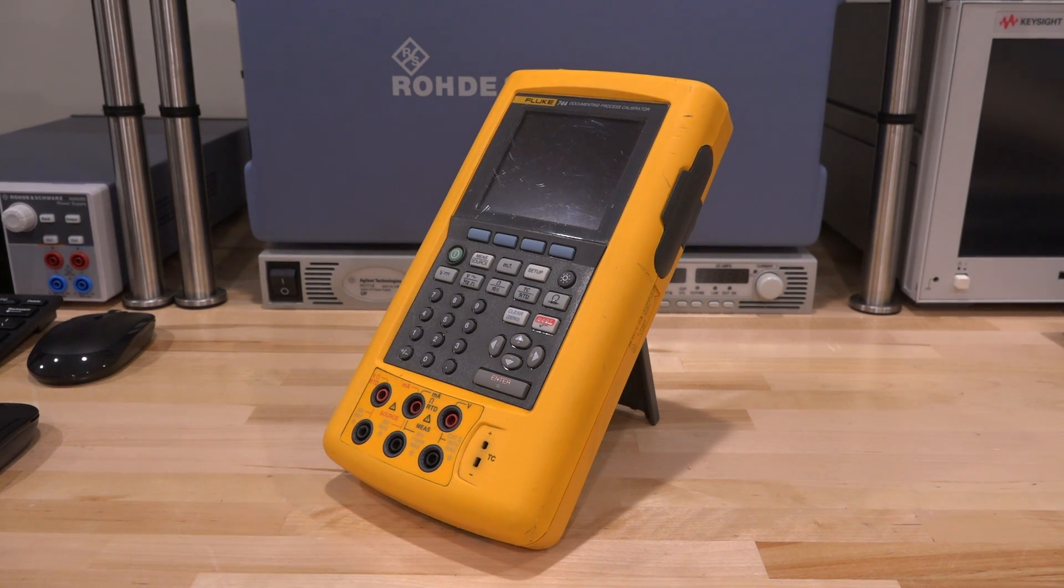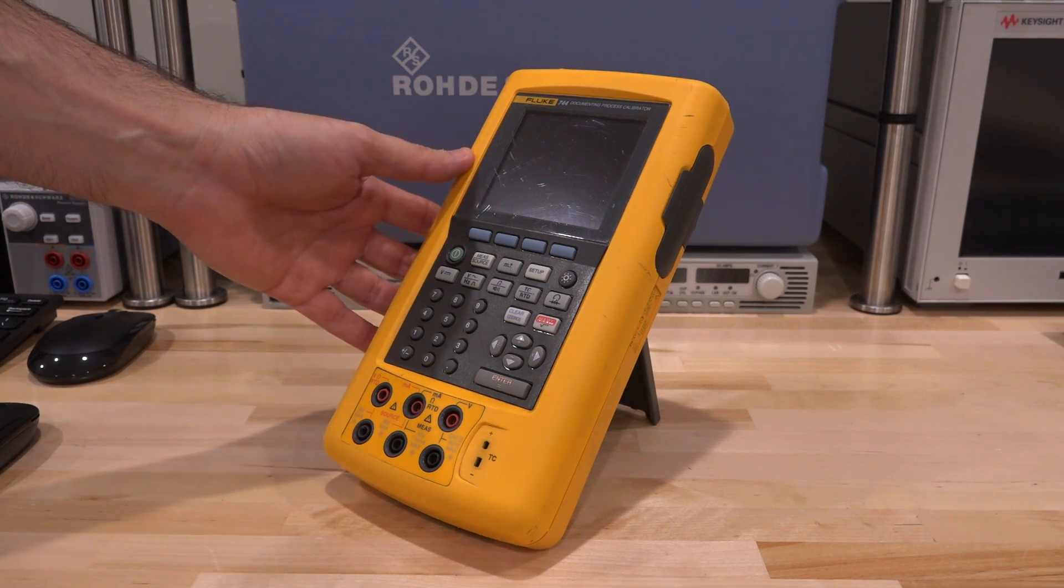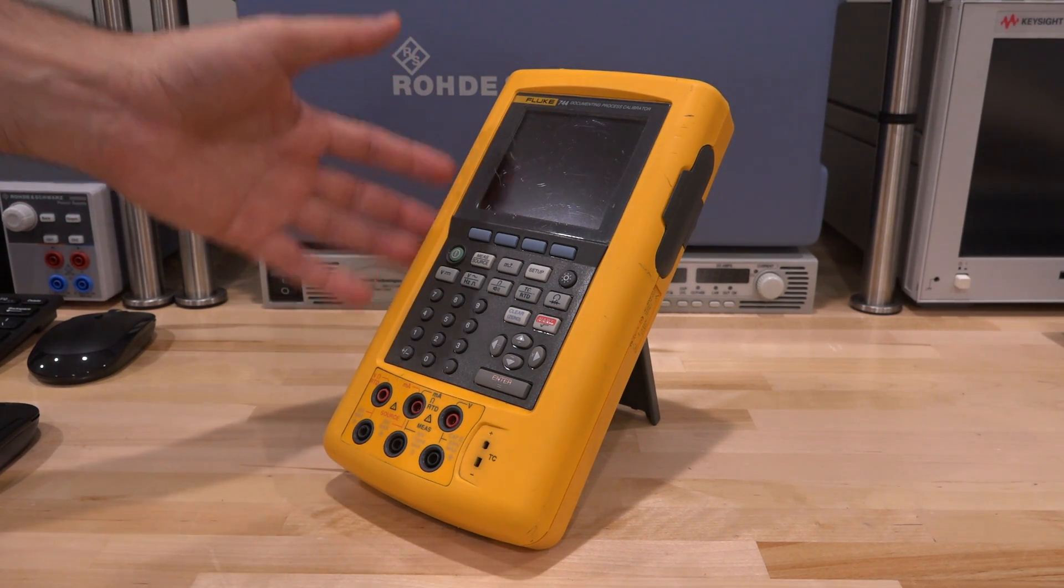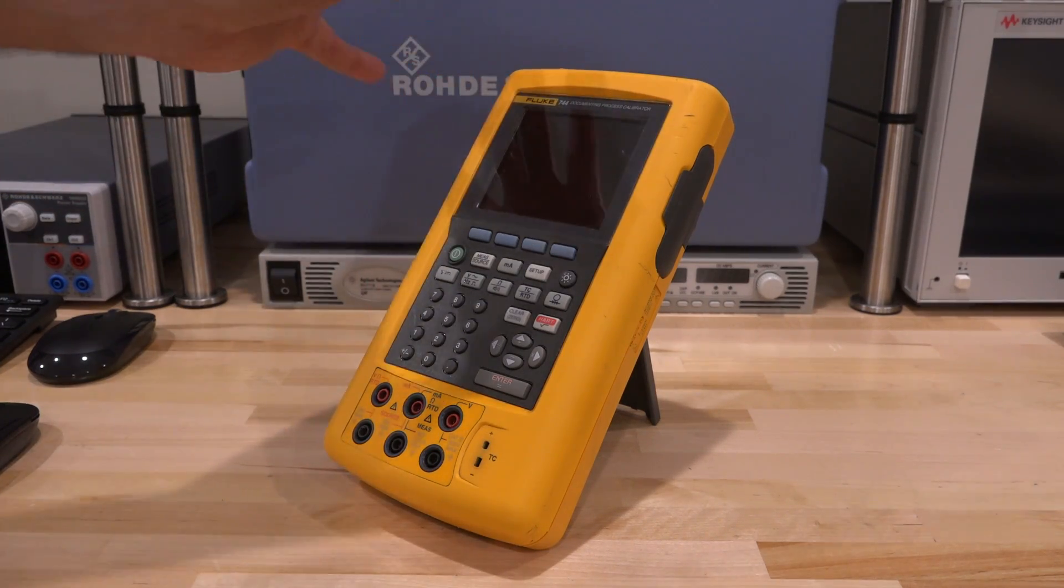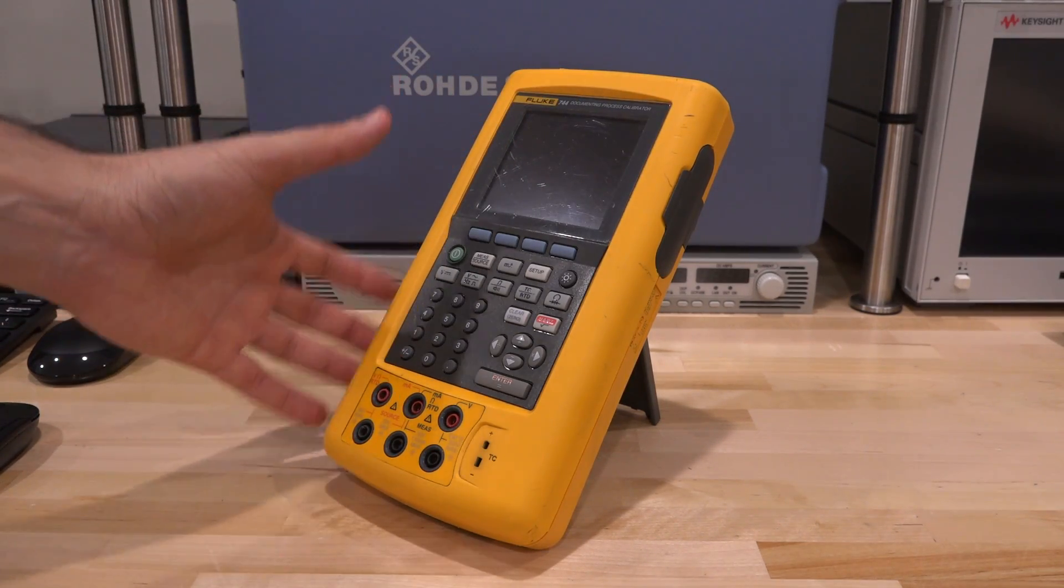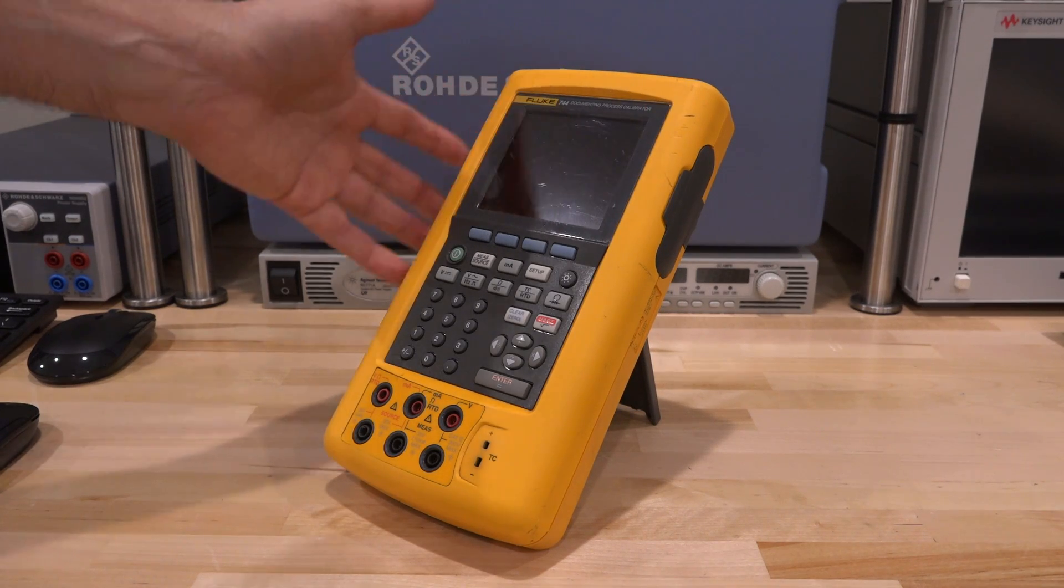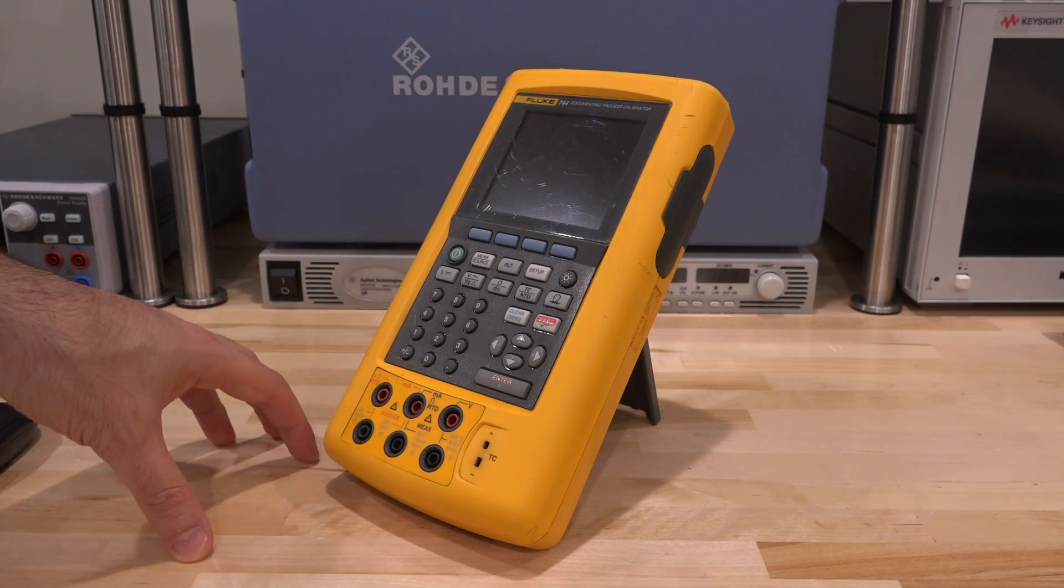Hi and welcome to the Signal Path. In the previous episode I tried to repair this Fluke 744 documenting process calibrator and we concluded that the firmware was corrupted. Since then I spent about 30 minutes fully cleaning it so it actually became much better. Of course these next-hand marks don't go away but it is as you can see quite a bit nicer.